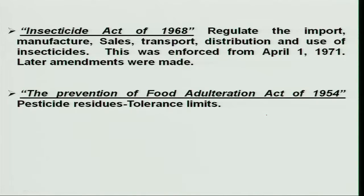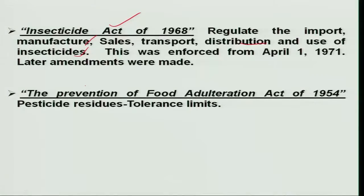The Government of India during 1968 passed an important act called the Insecticide Act of 1968, which mainly regulates the import, manufacture, sales, transport, distribution, and use of insecticides. This was enforced from 1st April 1971, and later many amendments were made to this act. In between, there was also the Prevention of Food Adulteration Act of 1954, which includes information on pesticide residues and tolerance limits for various food commodities.